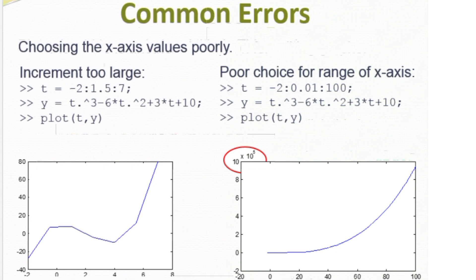Here's another example. This time I'm going to use the fine increment of 0.01, starting at minus 2, but I'm going to extend my graph all the way out to 100. What happens in this case is all the fine detail in my plot gets compressed or squashed out, because at t equal to 100 plugged into that polynomial, the y value is close to a million. So all the fine detail disappears. How do you know how to pick the x-axis values? A lot of times you just have to experiment — see what the plot looks like, change your values, increment, and range, and decide based on that.